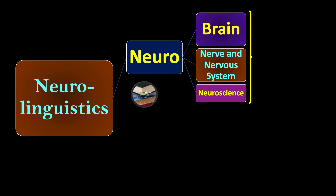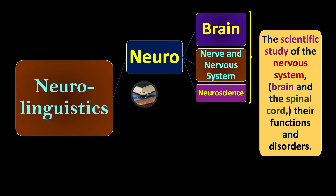What is neuroscience? The scientific study of the nervous system, brain and the spinal cord, their functions and disorders, is known as neuroscience.